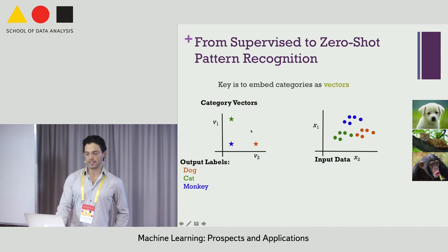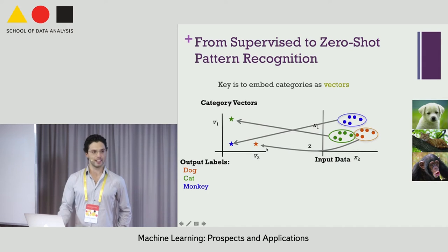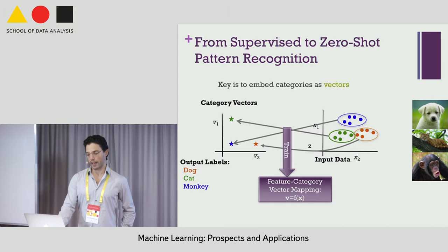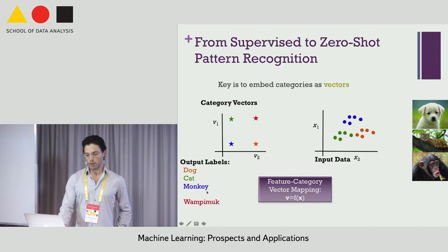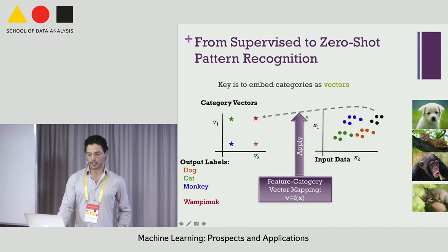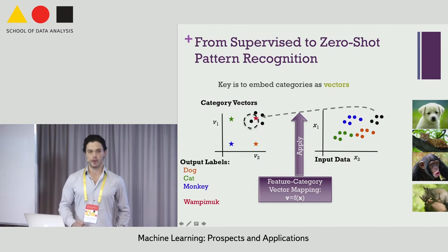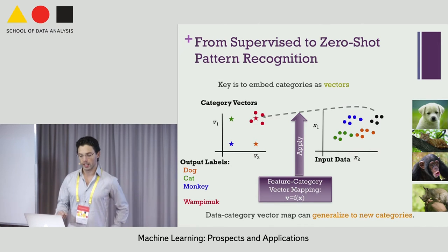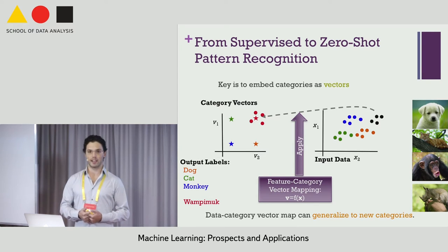Every output label — dog, cat, monkey — gets a multi-dimensional vector in this category vector space. Using the correspondence between training examples and labeled category vectors for a few background training categories, we learn a mapping from the feature space to the category vector embedding. At test time, we get a new category like wampum, obtain its category vector, map new images using the learned mapping, and do nearest-neighbor matching in the category vector space. This lets us generalize to new categories in a way regular supervised learning cannot.